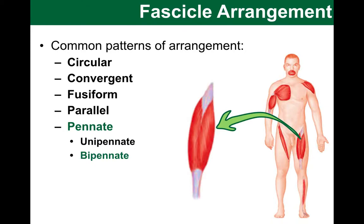Finally, the last arrangement I want to include is the multipennate arrangement. Like in the example of the deltoid muscle, which wraps around the shoulder rather superficially, these fibers attach to one tendon but have a feather-like arrangement.